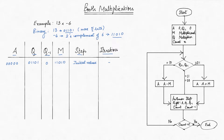Now, as per Booth's algorithm, the highlighted pattern is 1,0, so we perform the subtraction operation A minus M and set the result value in register A.